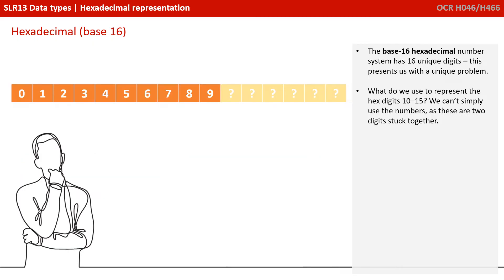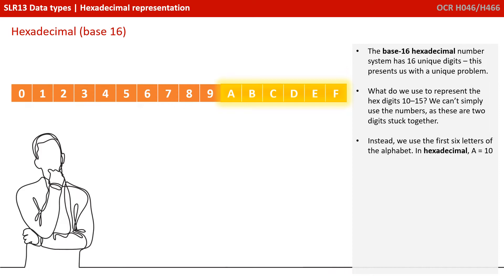Hexadecimal is a base 16 number system, and it follows exactly the same principles as the other number systems we've just been looking at. The only difference is with hex we have 16 unique digits. This obviously presents us with a bit of a unique problem — what do we use to represent the hex digits 10 to 15? We can't simply use our decimal numbers 10 or 15, as these are two digits stuck together. Well, we simply choose to replace digits 10 to 15 with the alphabetic letters A through F.